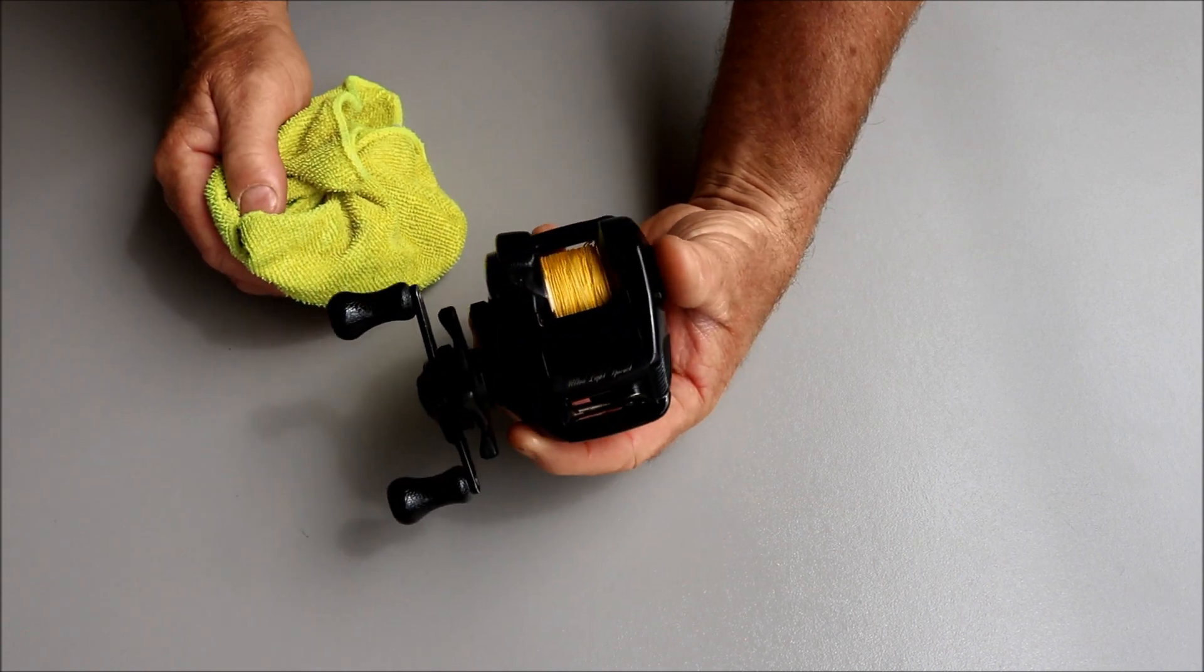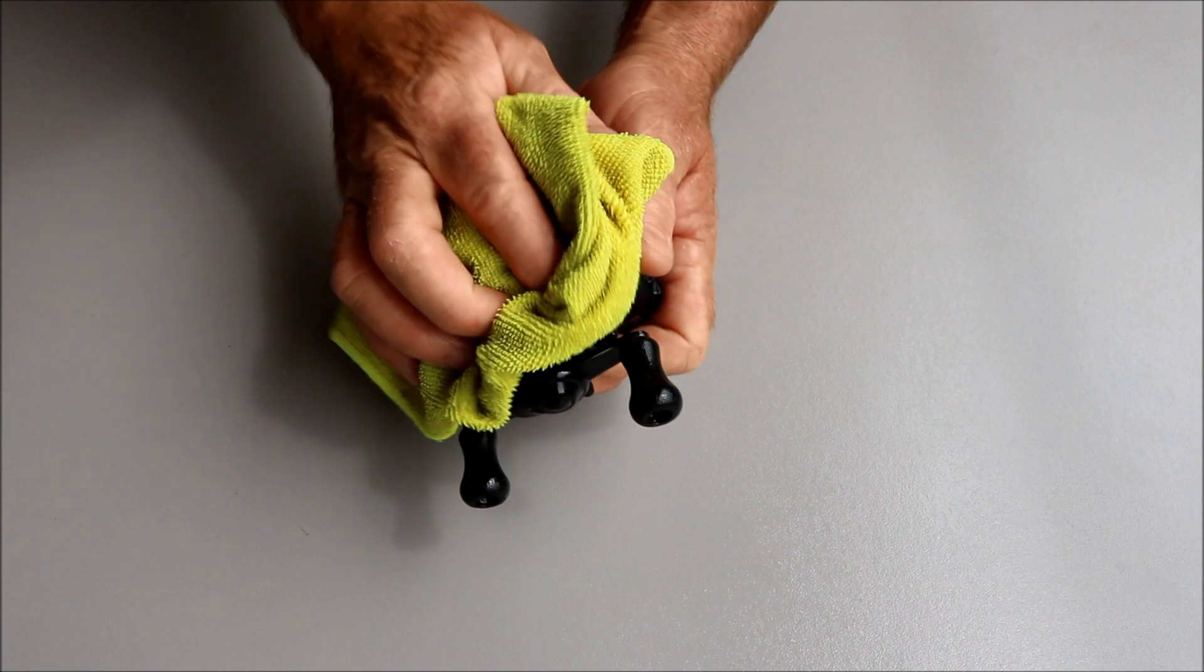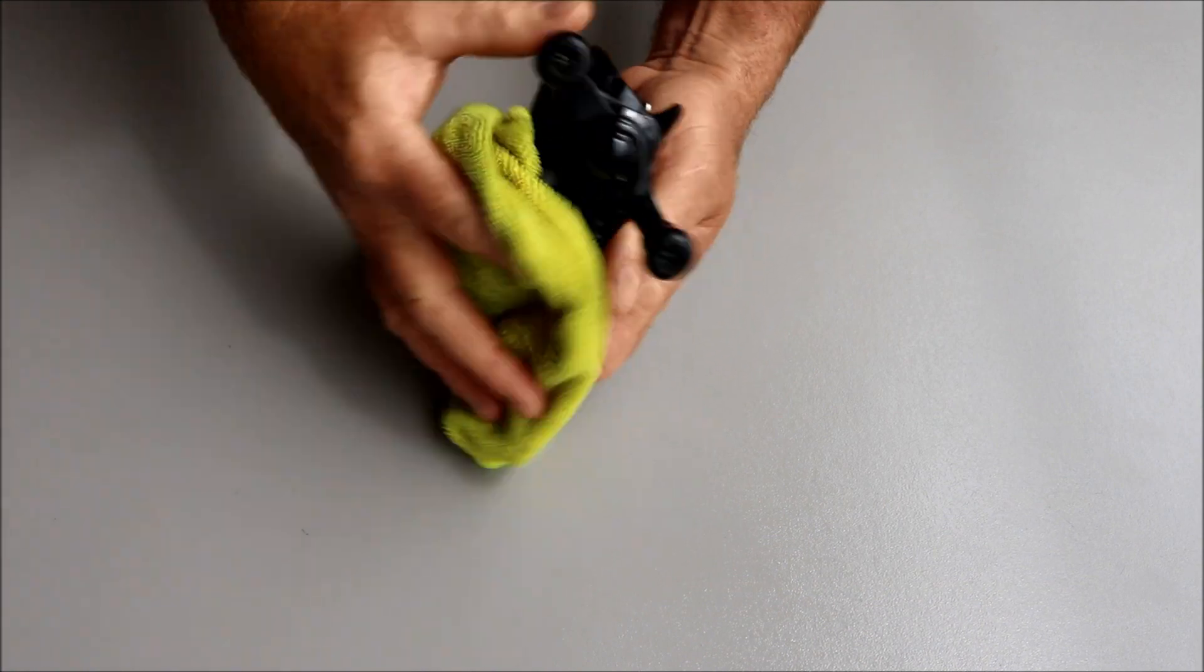And this is where most of the problems come with bait casters. So it's just a damp cloth and just wipe it over.